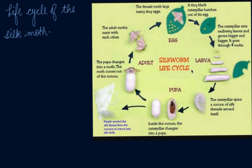When the silkworm is ready to enter the next stage in the life cycle, it starts weaving a net to hold itself. The caterpillars start weaving a thread-like structure — a net around themselves in order to protect themselves.